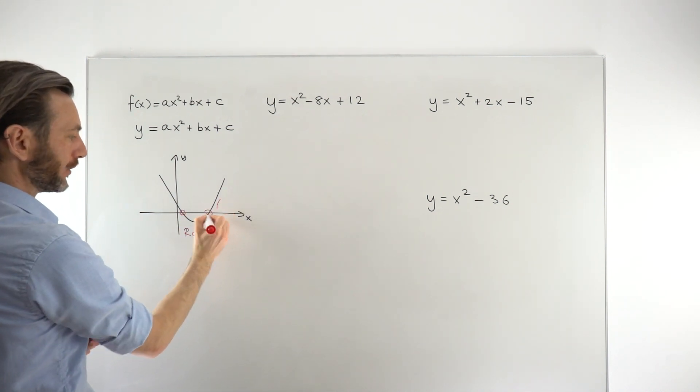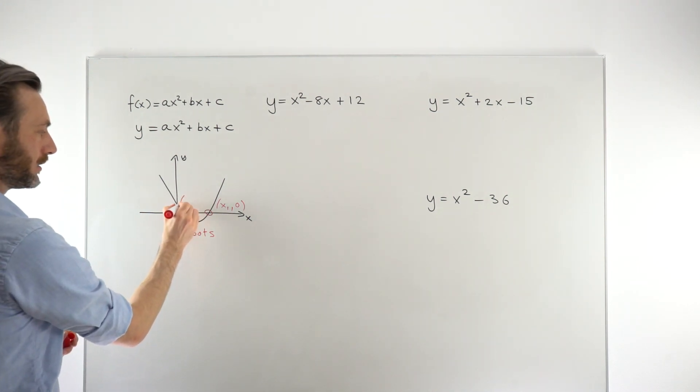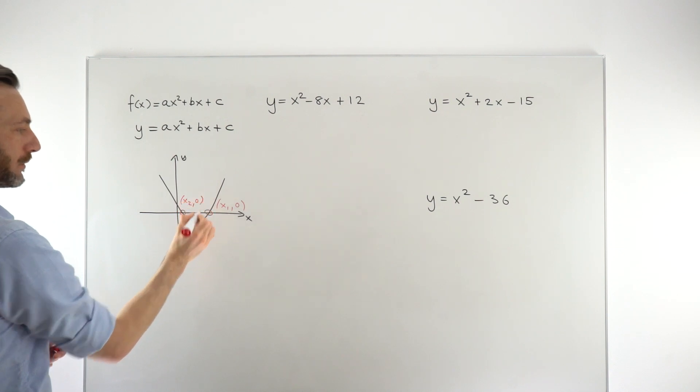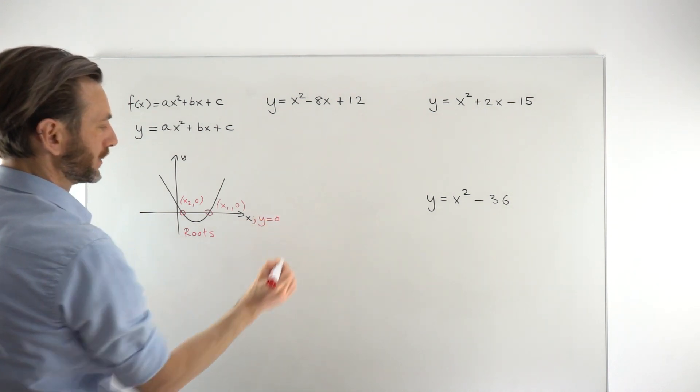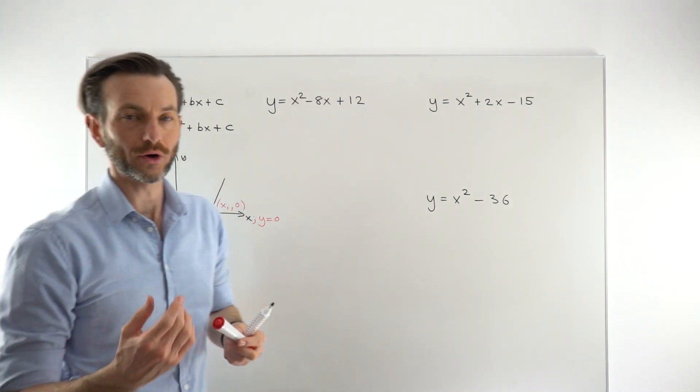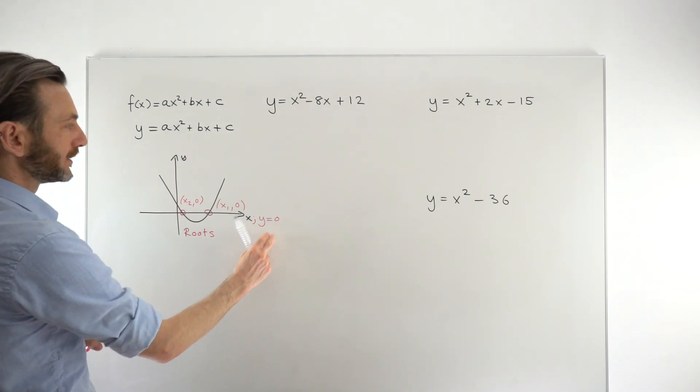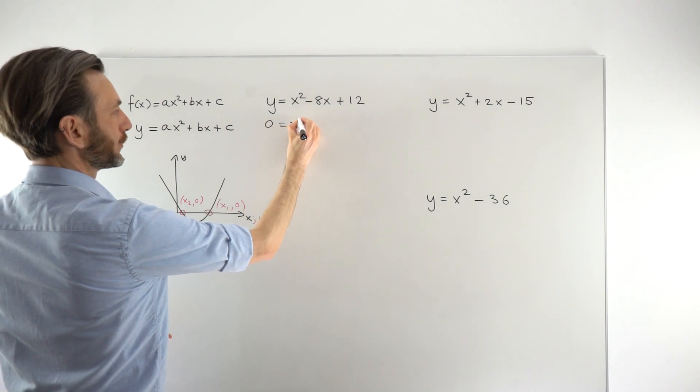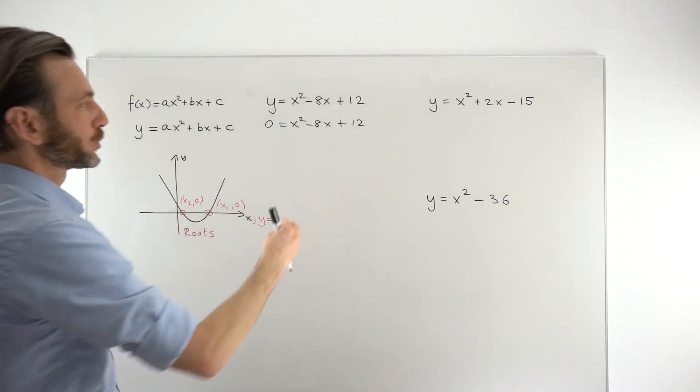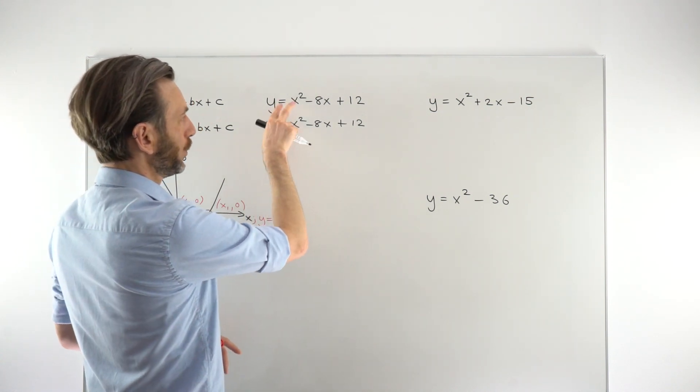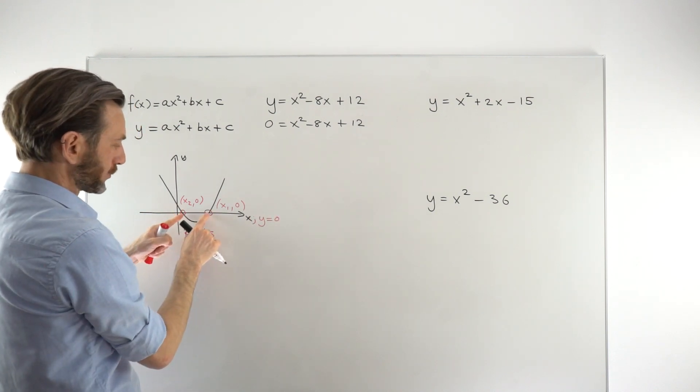We know that the coordinate of that point there is some x value, x1 and 0 for the y value. We know that the coordinate for this guy here is some other x value, x2 and a y coordinate of 0. So any point along the x-axis has got a y coordinate of 0. So if you're on the x-axis, then your y value is 0. So that gives us a method for finding the roots by substituting a 0 in here for y, and then solving the resulting quadratic equation.